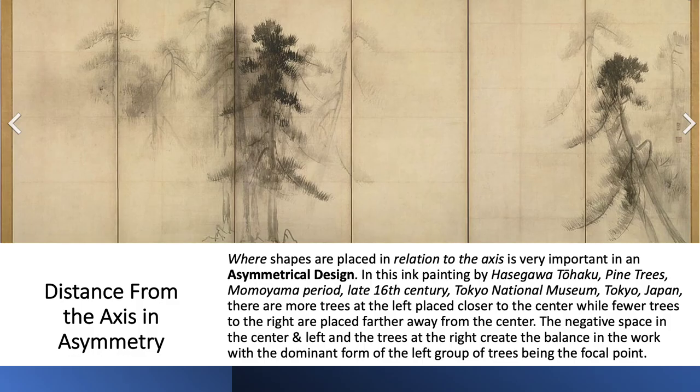Where the shapes or forms are placed in relation to the axis is very important in an asymmetrical design. In the painting Pine Trees by Tohaku, you can see that we have the large group of trees on the left-hand side, and then we have a smaller group of trees very far out from the axis over to the right — and that's what creates the balance in the design. One group is closer to the axis, and the smaller group is farther away.